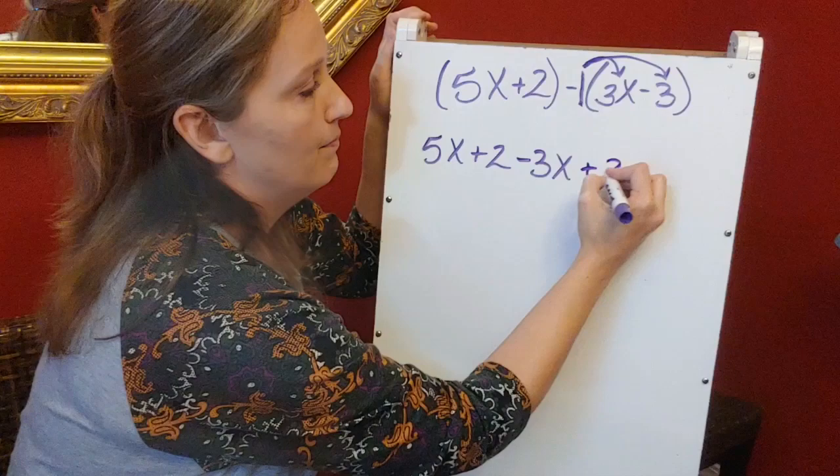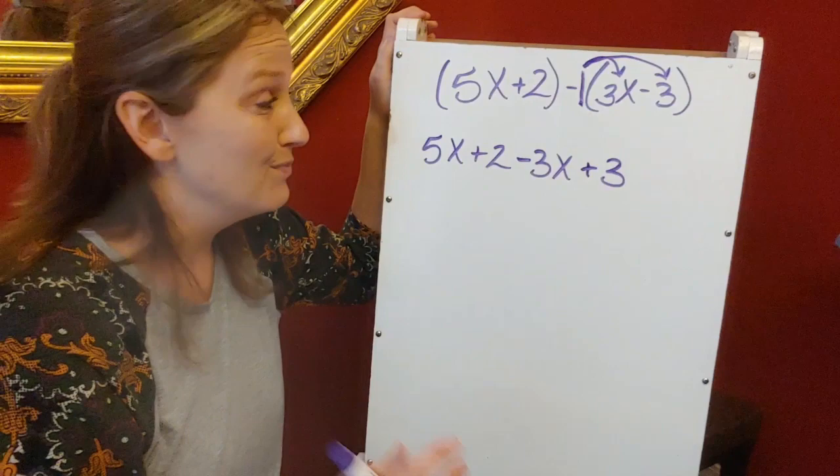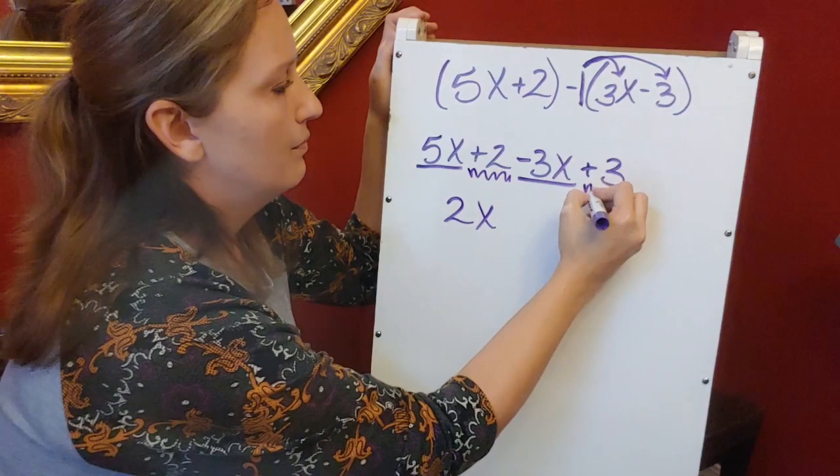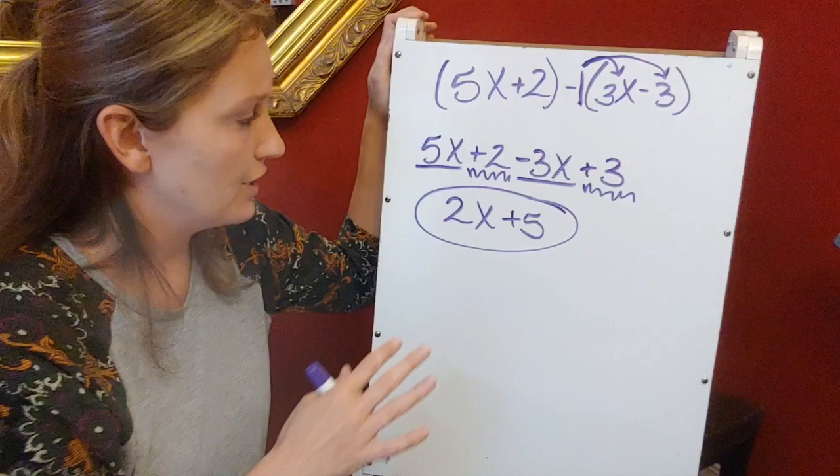Then once we get this expression here, I'm going to look for like terms. This is just like yesterday whenever we combined like terms. I can combine this 5x and that minus 3x to give me 2x, and this 2 plus 3 to give me 5. And that is subtracting these two in this expression.